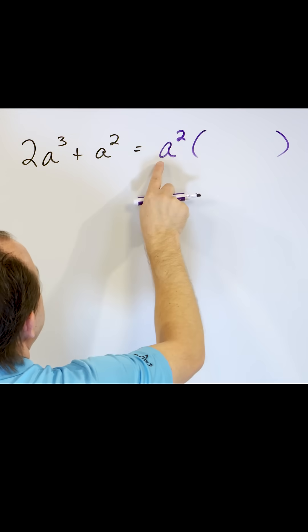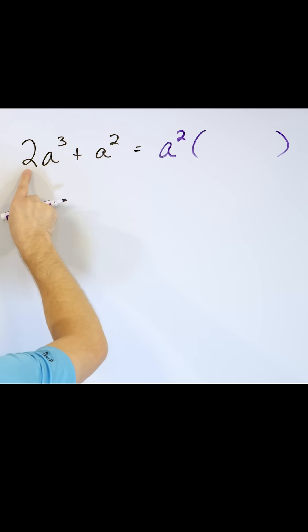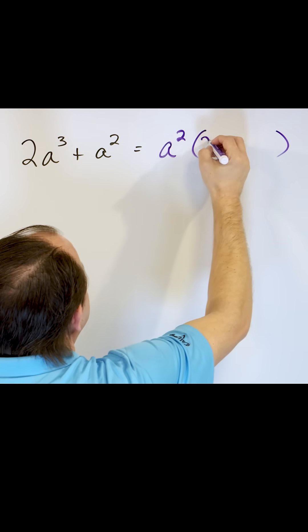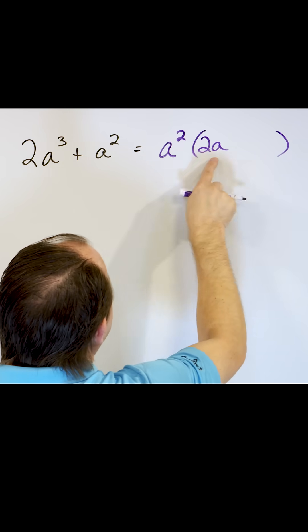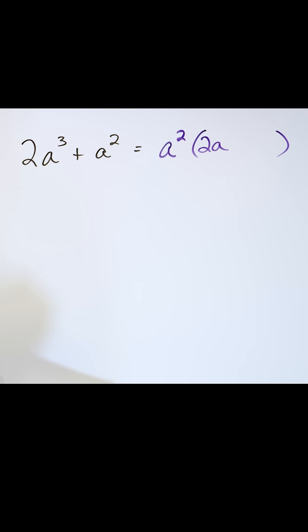Open my parentheses. Now, a squared times something has to give me 2a cubed. What has to fit here is 2 times a, because a squared times this will be 2a cubed. You add those exponents, right?